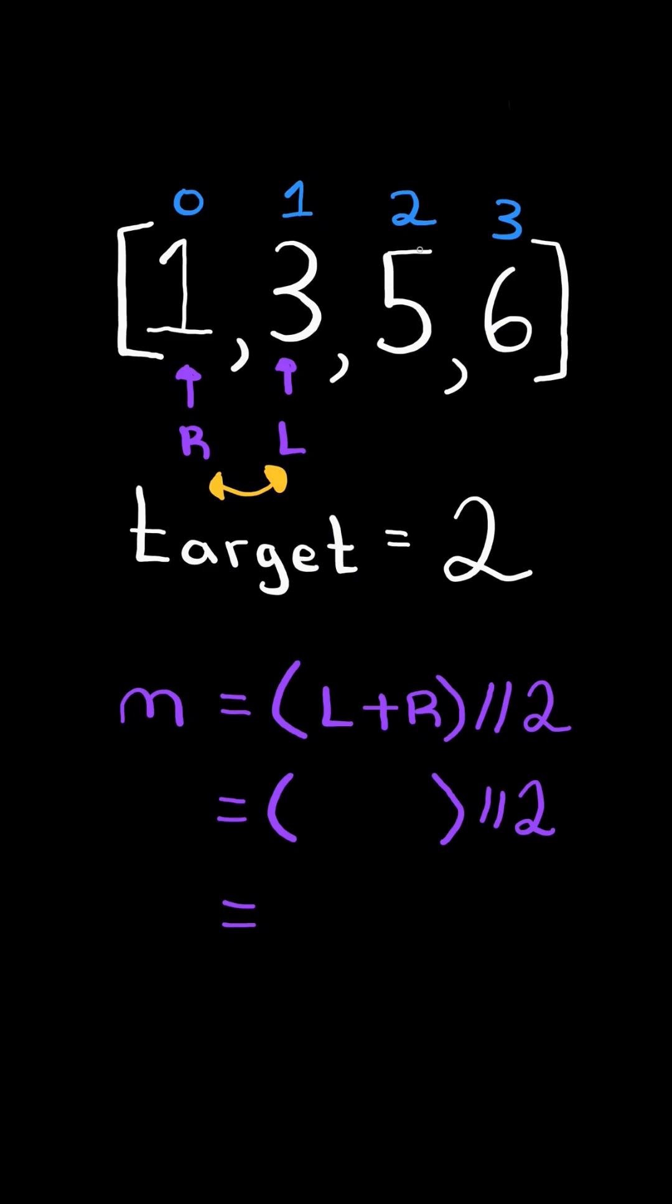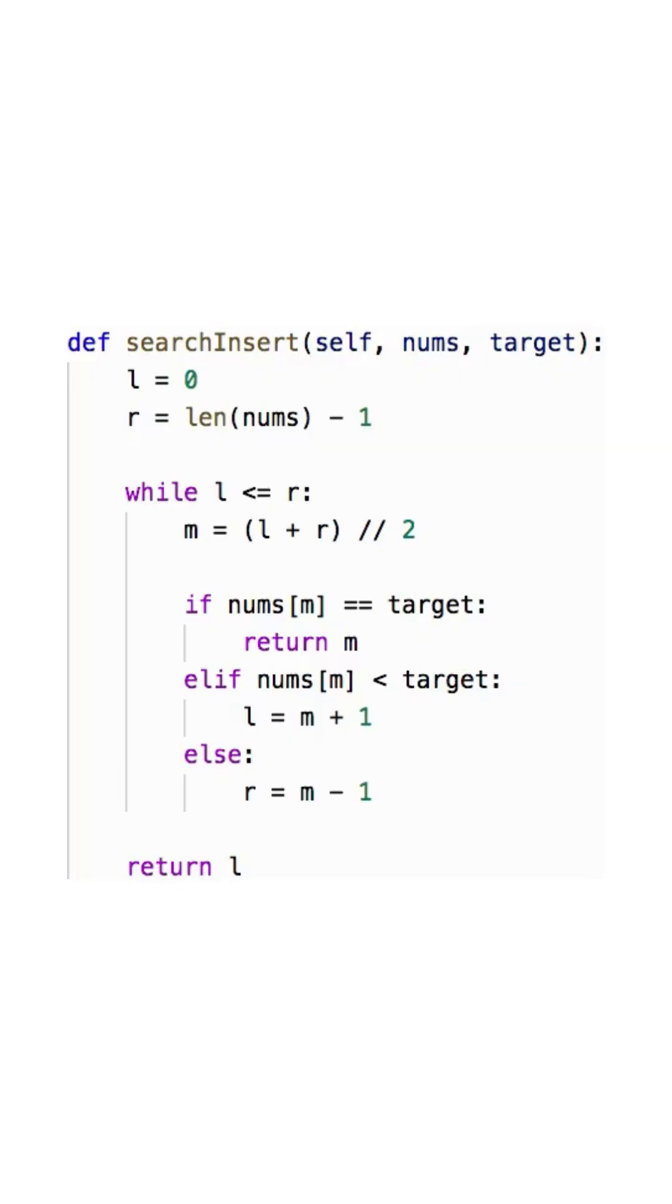When L and R cross each other, we stop the algorithm, and L will be the index of where we need to insert target into the list. And here's the code to do so.